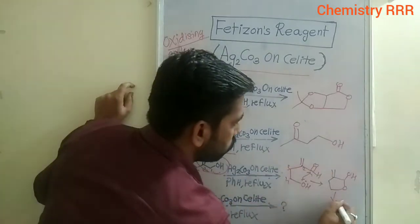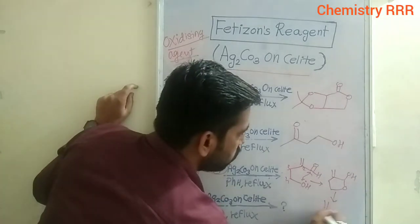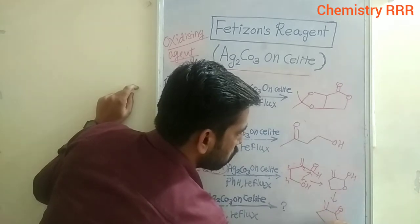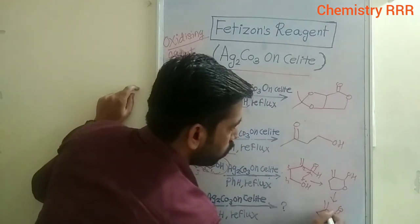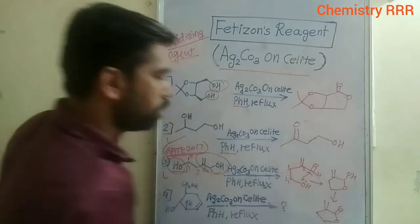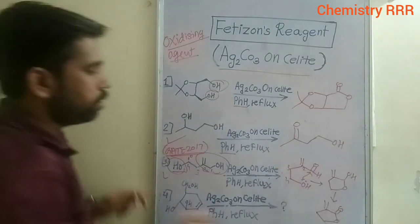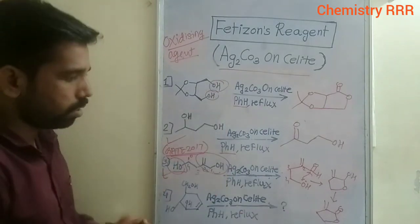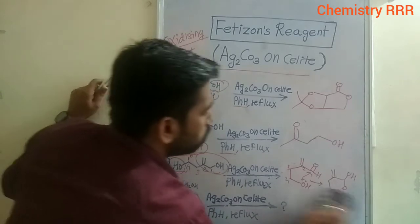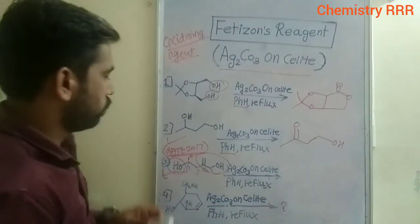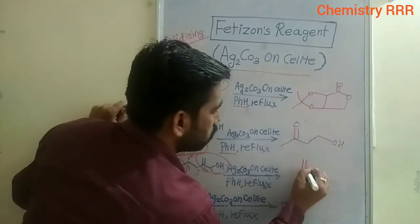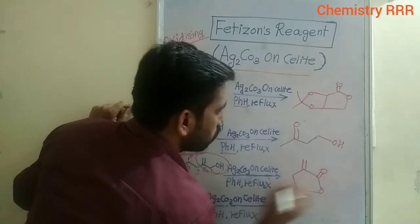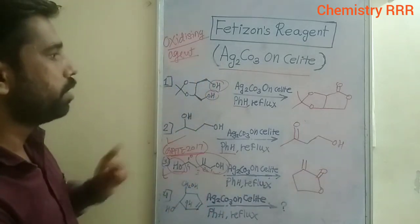So the product of this reaction is a five-membered lactone — carbons 1, 2, 3, 4, 5. This is the product of example number three. I can directly write the product. This is the product of this reaction.